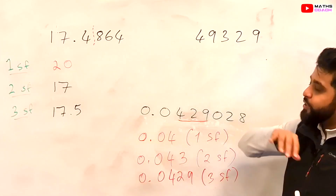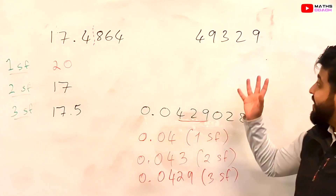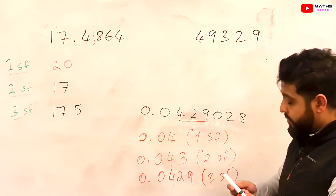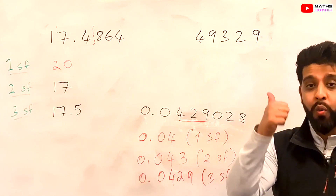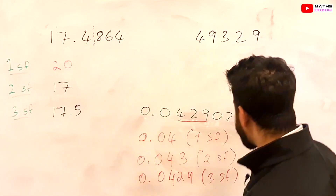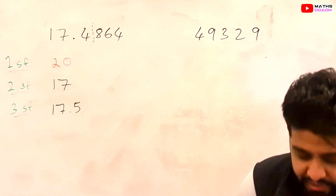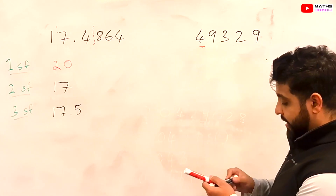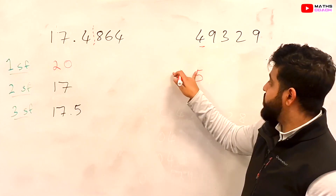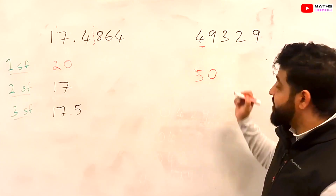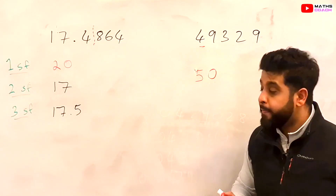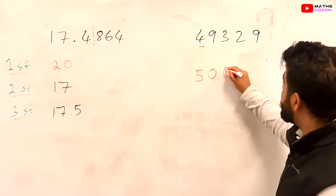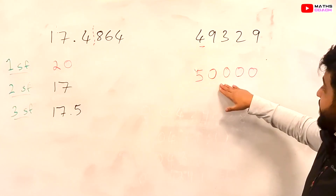This brings us to our last number, 49329, which most students find quite difficult. We want to round it to one significant figure, two significant figures, and three significant figures. The first significant figure is 4. The number next to it is 9, so it's going to make this into a 5. Now remember, you can't leave just a 5 — you have to make sure it represents the entire number. 49329 is close to 50000, so we write 50000 to one significant figure.